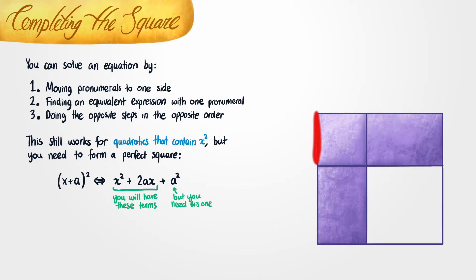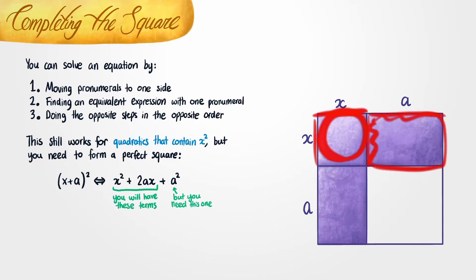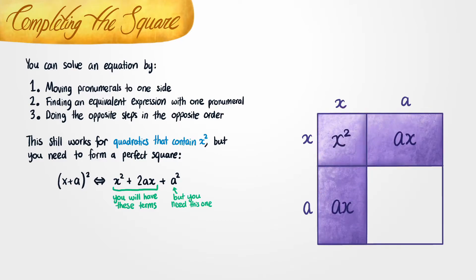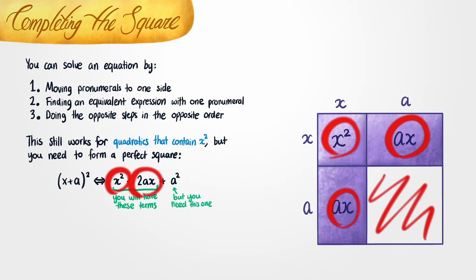This side over here can be thought of as x, and this side over here can be thought of as a. Therefore this side is also going to be x, and this side is also going to be a. This section is going to be x squared since it's x times x. Then this section is going to be a times x, or ax. And this one down here is also going to be ax. That accounts for most of the square: the x squared shows up here, and then you've got ax plus ax, which is the same thing as 2ax. But then we just have this missing section, which is going to equal a squared, because this side is a and this side is also a.